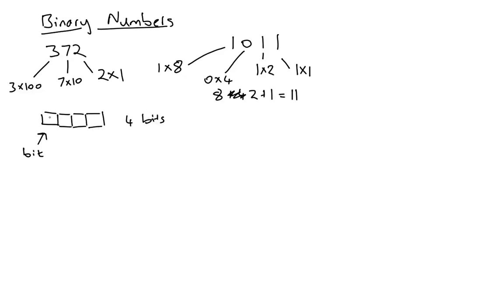To represent this number 1011, which is eleven in decimal, we could switch each bit on or off. Each bit has two possible states which we could call on or off, or we could represent it with zero or one.